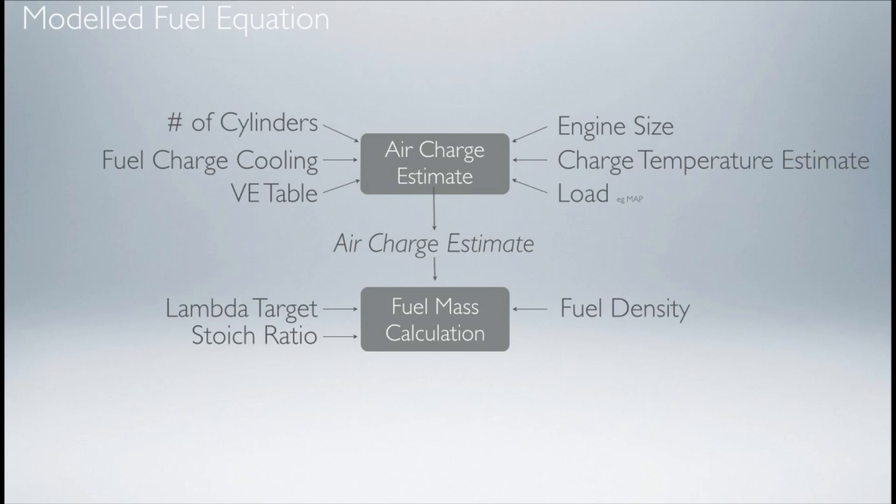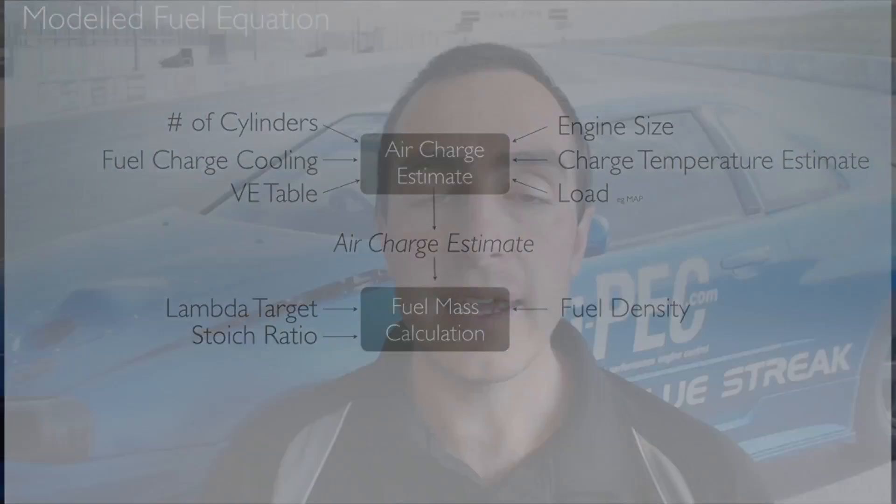Another input the ECU needs, depending on the fuel type, is the stoichiometric ratio. In lambda, the stoichiometric ratio is 1, but in AFR it varies depending on the fuel type — for petrol it's generally around 14.7 to 1, and for ethanol somewhere around 9 to 1. There's a table in the help file listing different fuels and their stoichiometric ratios. Keep in mind this can vary a little with the fuel from season to season or from supplier, so if your supplier can provide data for the fuel, that's even better.